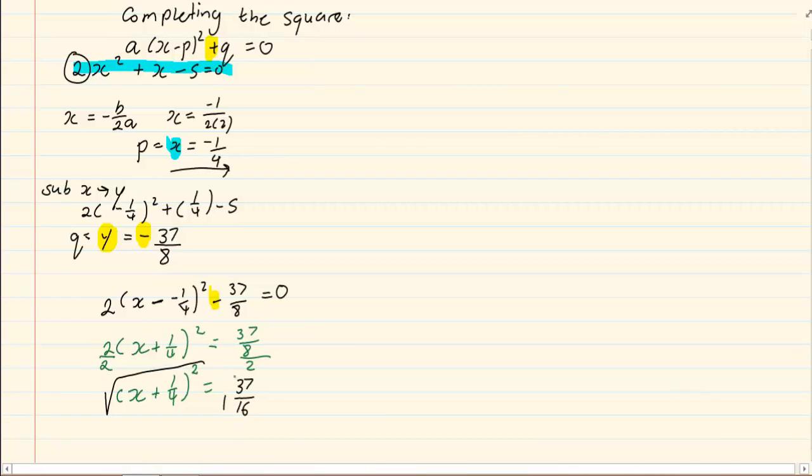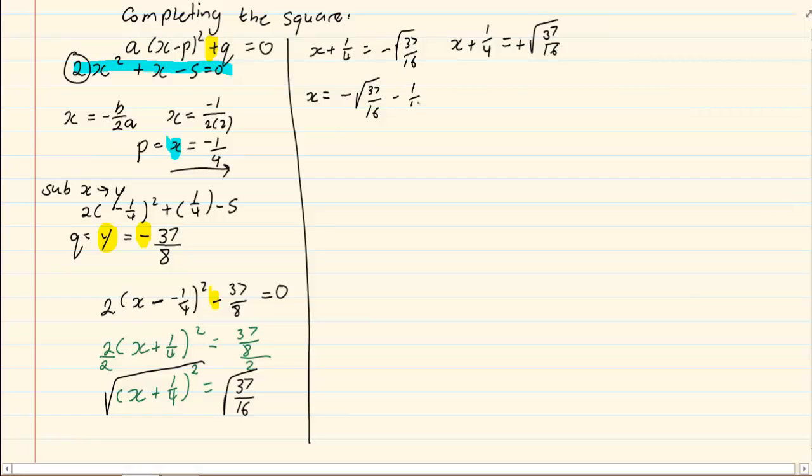Then we square root both sides giving us x plus a quarter is equal to negative root of 37 over 16. We further solve x equals negative root of 37 over 16 minus a quarter, and x equals positive root of 37 over 16 minus a quarter. You can then use your calculator. If they say they want it in surd form, you may leave it in this form. If they say they want it in a decimal, then you have to use your calculator to get the correct answer. x equals negative 1.77 and x equals 1.27.